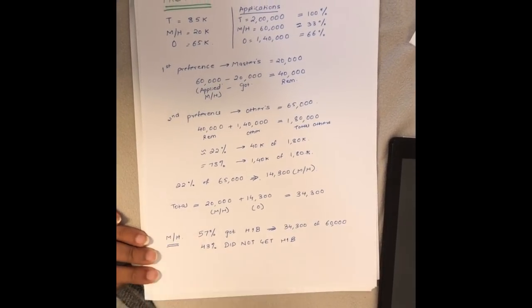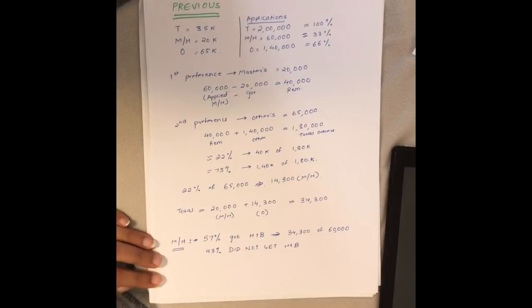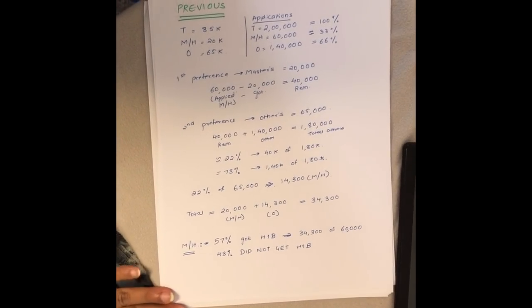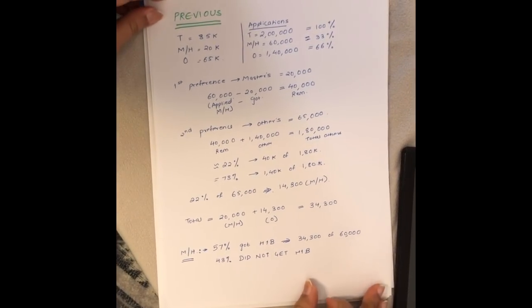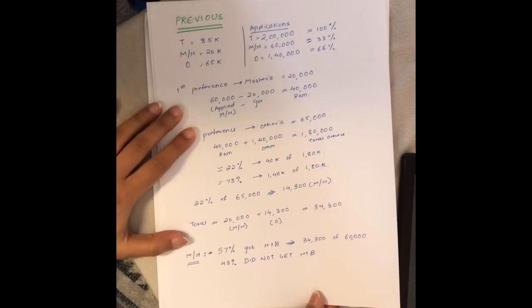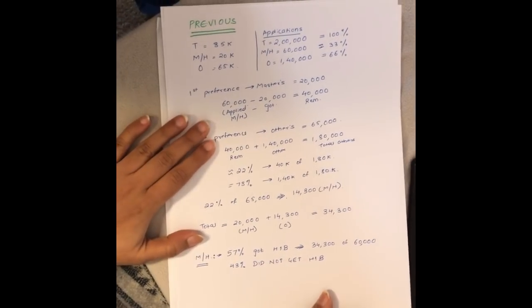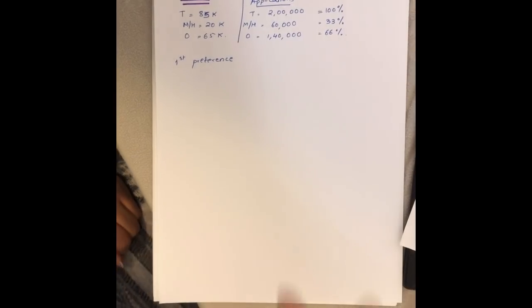If you take this into percentages, it becomes 57 percent got H1B who were masters or higher (34,300 of 60,000), and 43 percent did not get H1B for masters or higher education.